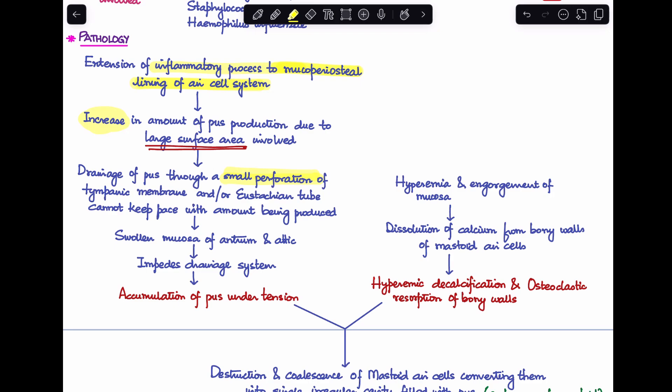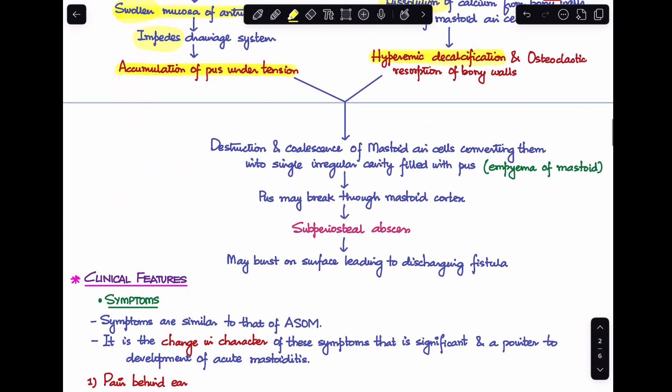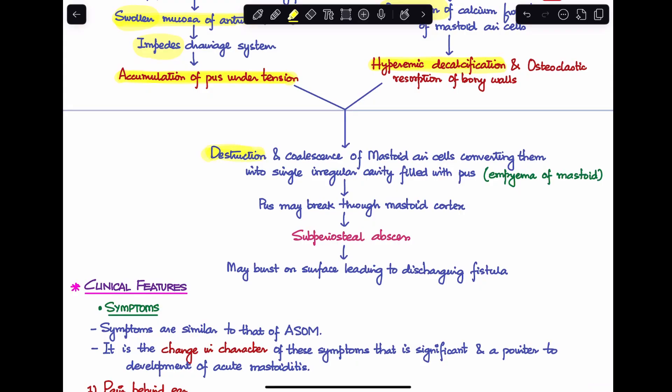This leads to swollen mucosa of the antrum and attic. This swollen mucosa further impedes drainage, leading to pus accumulation under tension. In mastoiditis we also see hyperemia and engorgement of mucosa, which leads to dissolution of calcium from the bony walls of the mastoid air cells. When there's calcium dissolution, it's called hyperemic decalcification, and there is osteoclastic resorption of the bony walls.